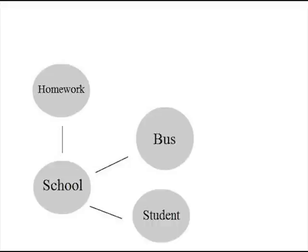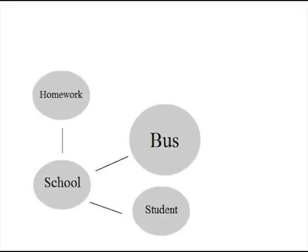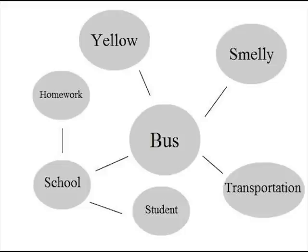Now that we have a start to the network, we can look more closely at the three branches that come from school. Let's look at bus and treat this branch as the new start. What are some concepts and ideas we can connect to the idea of bus? Besides school, we can connect yellow, smelly, and transportation.